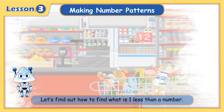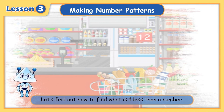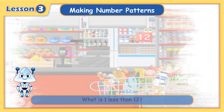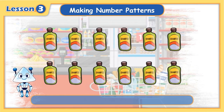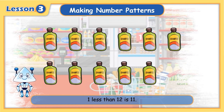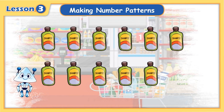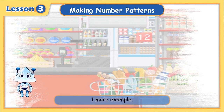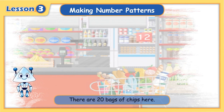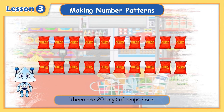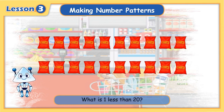Let's find out how to find what is one less than a number. What is one less than 12? One less than 12 is 11. One more example: there are 20 bags of chips here. What is one less than 20?